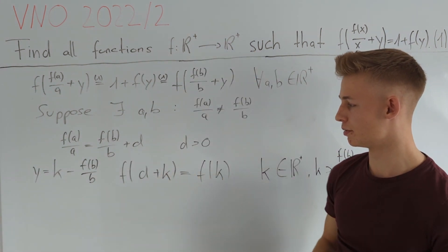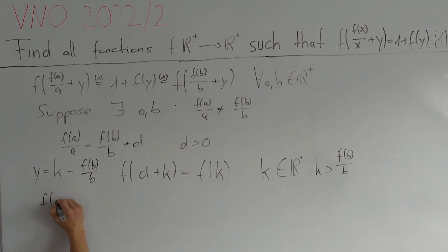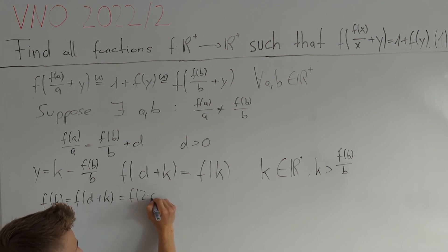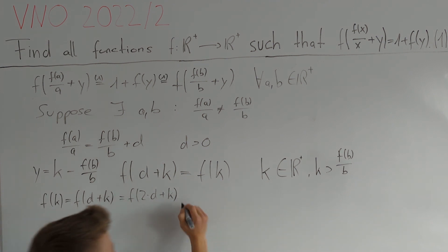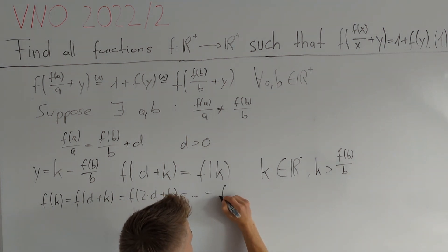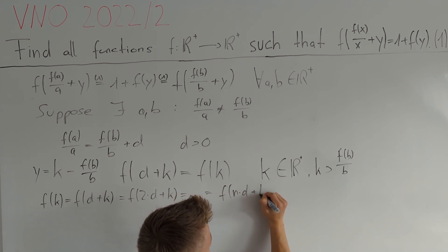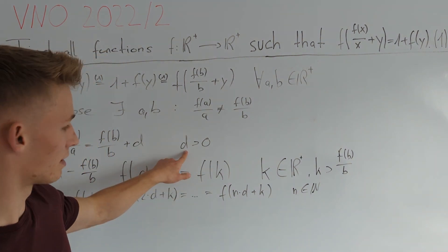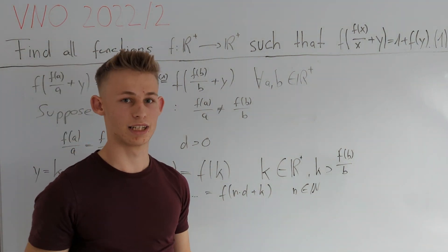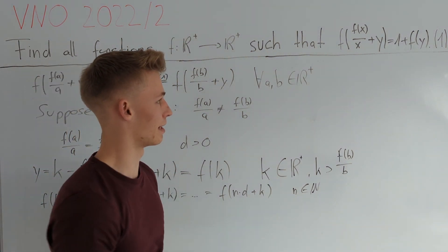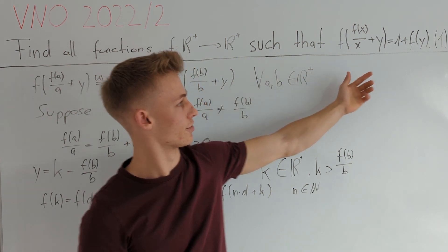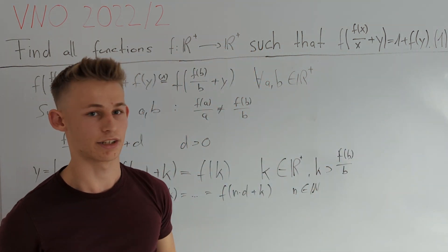Now we can use this identity repeatedly to get that f(d + k) = f(k), and applying it again: f(2d + k). Continuing up to some positive integer n, we get f(nd + k) = f(k). Since d is greater than 0, this argument can be arbitrarily large while the function value stays the same. On the other hand, from equation 1, if the argument becomes larger, the value also becomes larger — so we try to derive a contradiction.